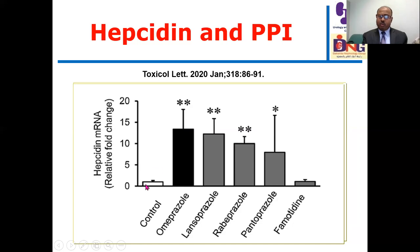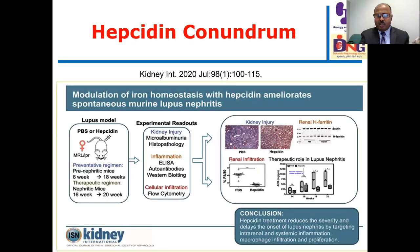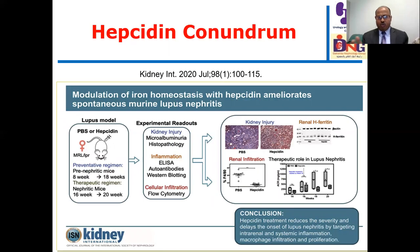Correlating PPI use and anemia, hepcidin acts as a marker of inflammation resisting and forming a barrier to successful anemia management. However, in an experimental murine lupus nephritis model, hepcidin showed another phase: hepcidin treatment reduces severity and delays the onset of lupus nephritis by targeting intrarenal and systemic inflammation and macrophage infiltration. So hepcidin has both a bad phase—anemia resistance—and a good phase—amelioration of kidney injury in lupus.